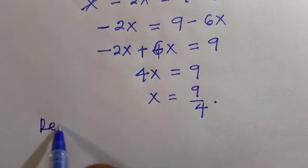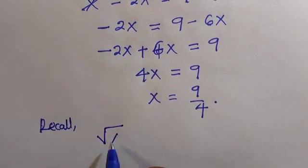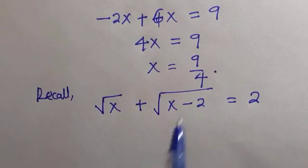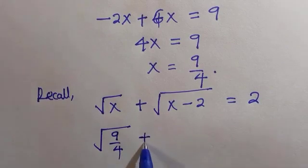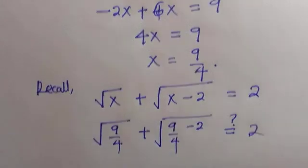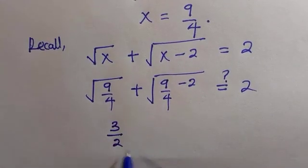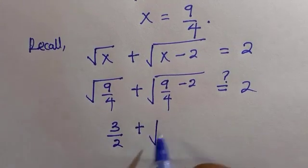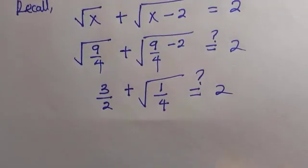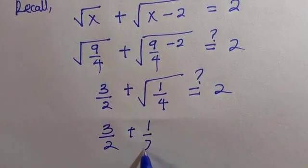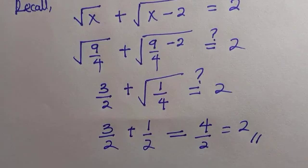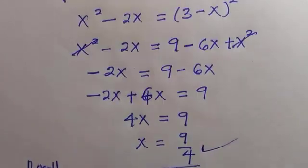Let's check if x equals 9 over 4 satisfies the original equation: root x plus root x minus 2 equals 2. Substituting: root of 9/4 plus root of 9/4 minus 2. Root of 9/4 equals 3 over 2. For the second term, 9/4 minus 2 equals 1/4, so root of 1/4 equals 1/2. Therefore 3/2 plus 1/2 equals 4/2 which is 2. The left-hand side equals the right-hand side, confirming x equals 9 over 4.